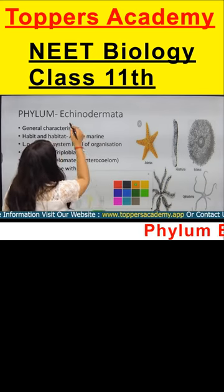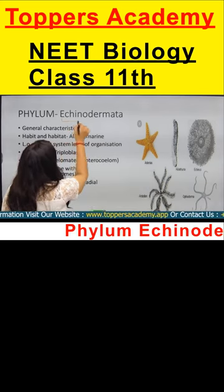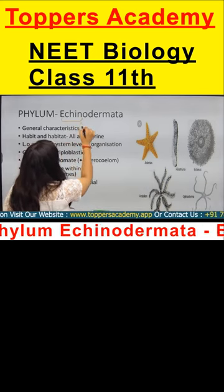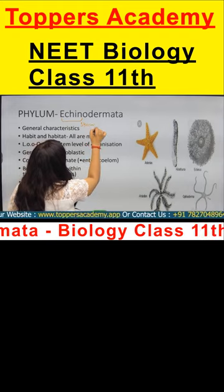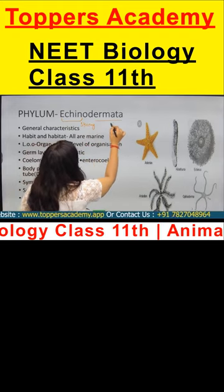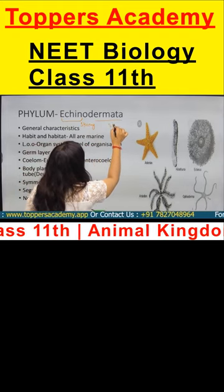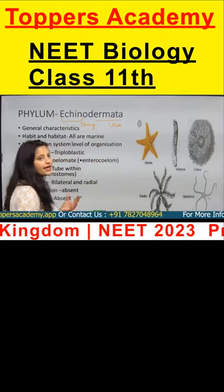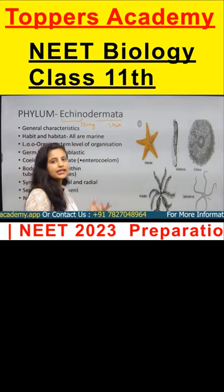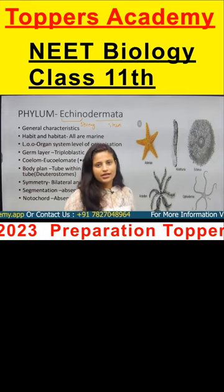These are the spiny body organisms. The word 'echino' is used for spiny and 'dermata' is used for skin, so they are spiny skin organisms.